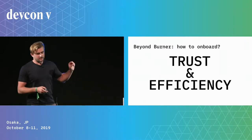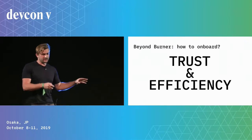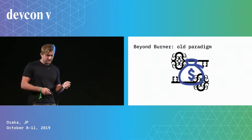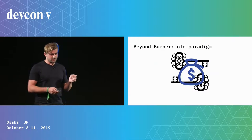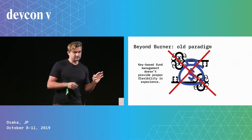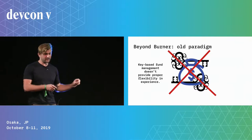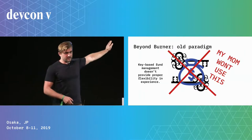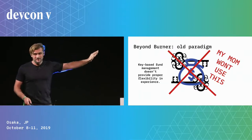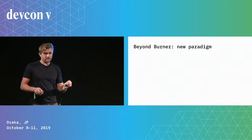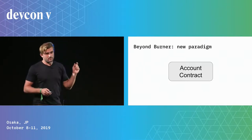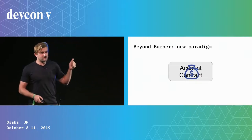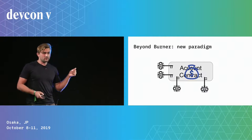To onboard users, you have to inspire trust and be efficient and convenient. The old paradigm of key management is challenging. I see the future as private key management being subsumed by a new contract-based management system — my mom will likely never download a private key. The new paradigm we're suggesting in Beyond Burner is to use burner wallet ephemeral keys with a contract account — essentially a multi-sig where you control funds with a number of different keys.